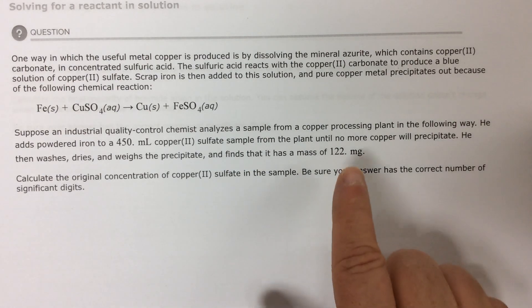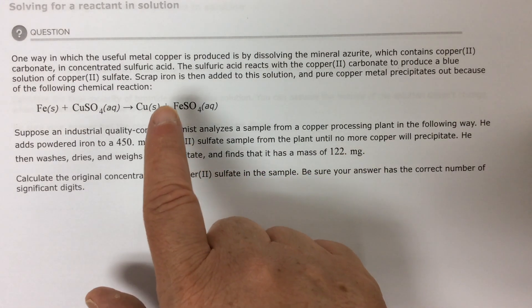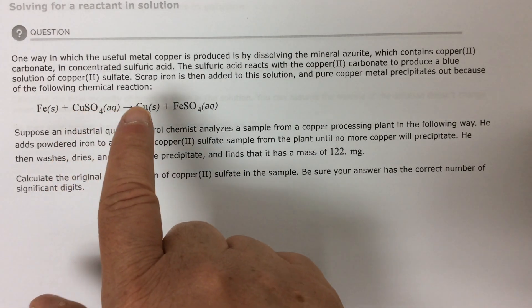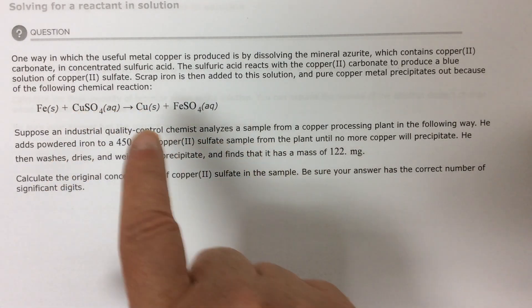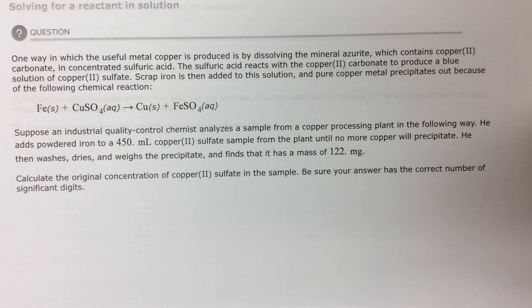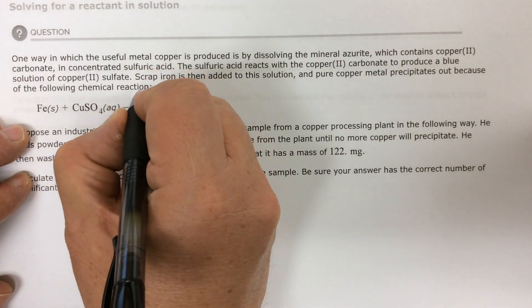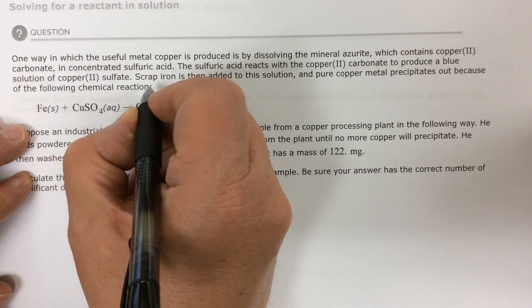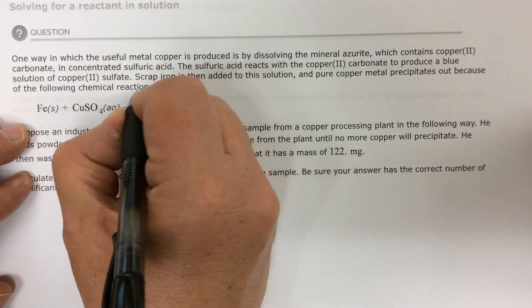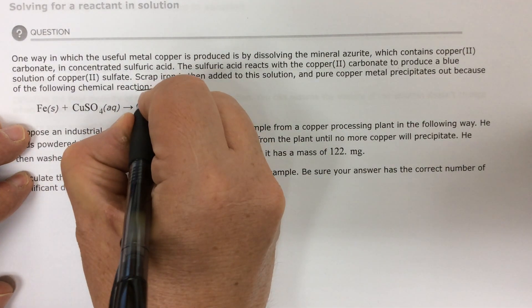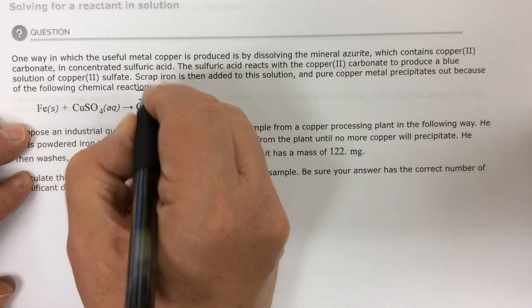You're given a certain amount of copper that was produced from copper sulfate. So copper sulfate is one of your reactants, copper metal is one of your products, and they told you how much copper metal that you had. So if you were to have 1.22 milligrams, you're going to have so many grams of copper. And then remember, you have to go through moles to get to the balanced equation.